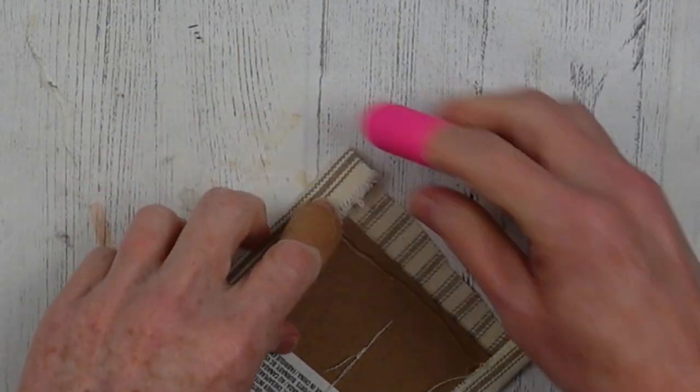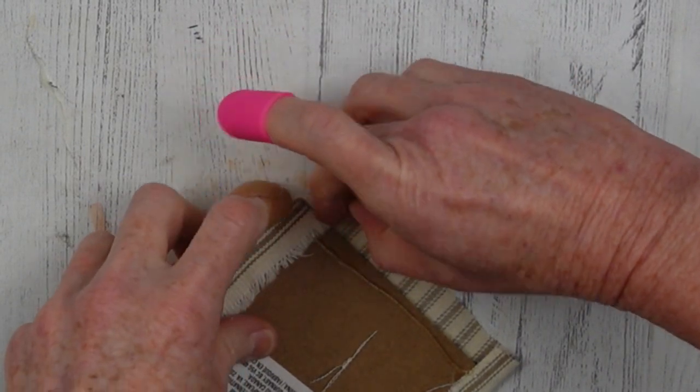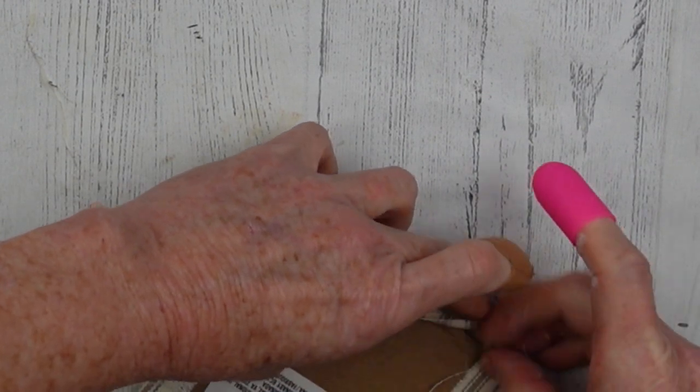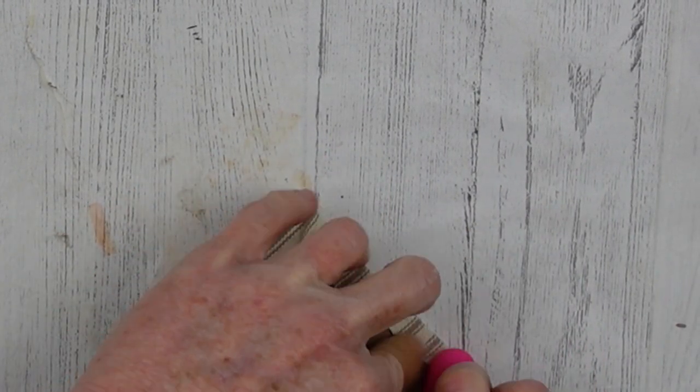And then on the back, you're just going to fold it like you're wrapping a package. Fold your corner in and then flip it over. Just be careful with your little fingers that you don't burn yourself.